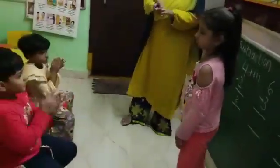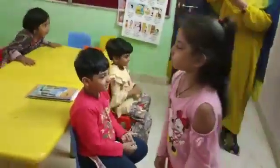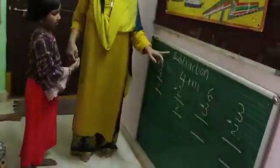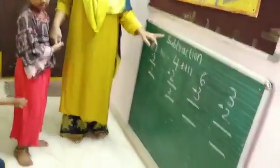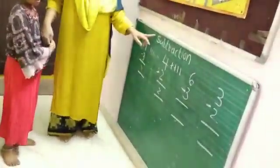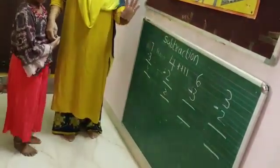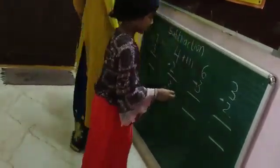Very good. Thanks to Ashika. So this is called subtraction. Subtraction is take away. How many numbers are these? Six.